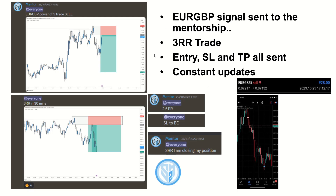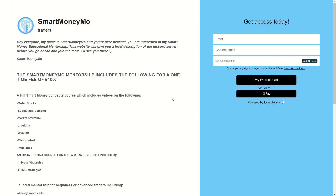This trade was sent out as a signal to the mentorship. It was a beautiful 3RR trade — we hit the 3RR in the space of only 30 minutes. You can see I sent the entry, stop loss, and take profit, as well as the analysis to the team, with constant updates letting them know when 2.5R was hit, when the stop was moved to break even, and when I exited my position. You can see my MetaTrader 5 results as proof of the entry.